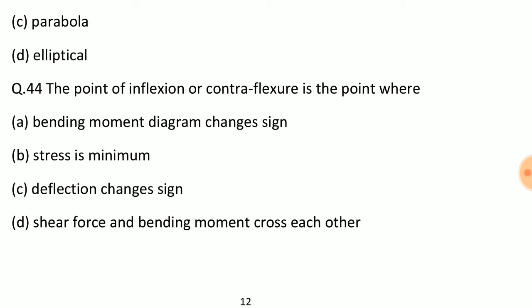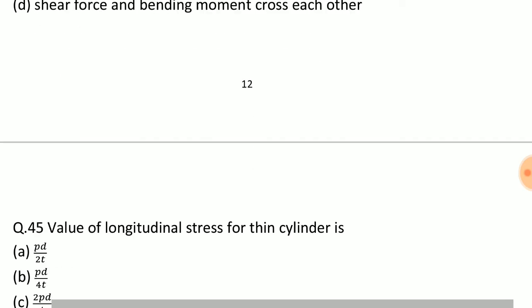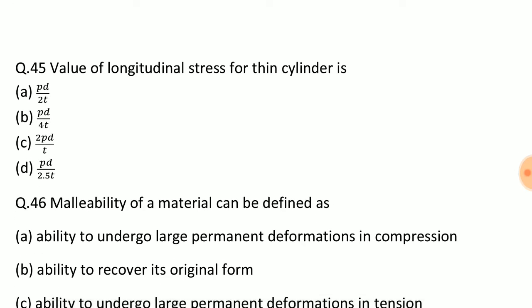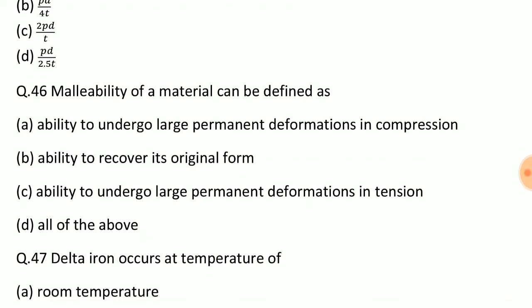Question: The point of inflexion or contraflexure is the point where? Answer: Option A, bending moment diagram changes sign. Question: Value of longitudinal stress for thin cylinder is? Answer: Option B, pd upon 4t. Question: Malleability of a material can be defined as? Answer: Option A, ability to undergo large permanent deformations in compression.